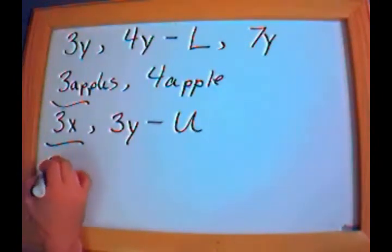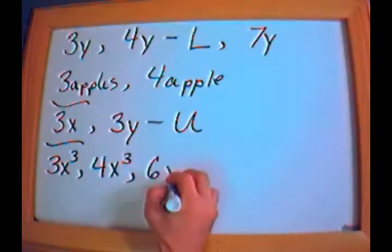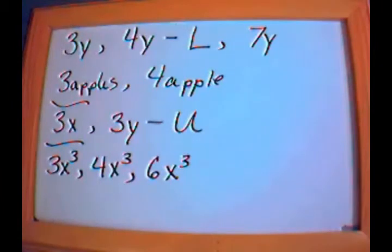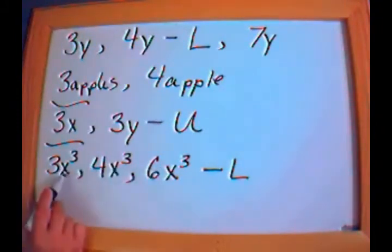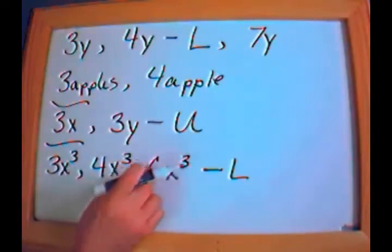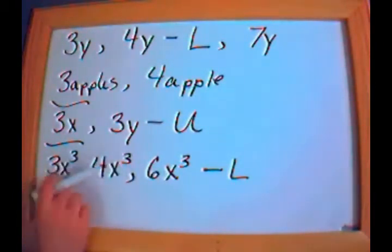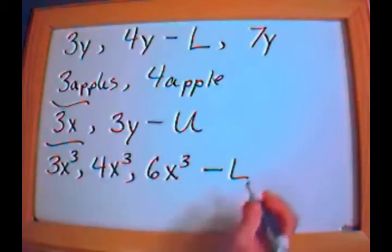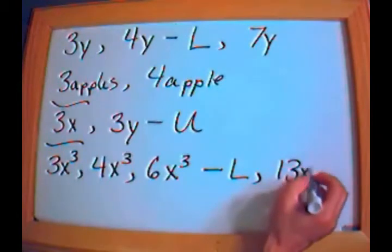What if I have a couple of different terms: 3x cubed, 4x cubed, and 6x cubed? Are these like or unlike terms? The answer is they are like terms, because in each case the variable is x to the third — x to the third, x to the third. Because they're identical, they're all like terms. If one were x to the tenth power, that would not be a like term. So because these are like terms I can add them: 6 plus 4 is 10, 10 plus 3 is 13x cubed.